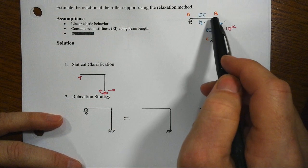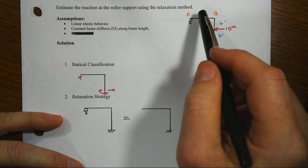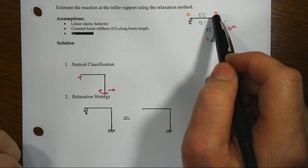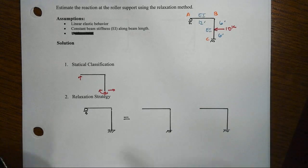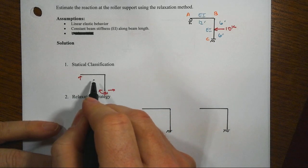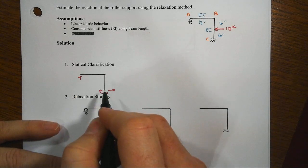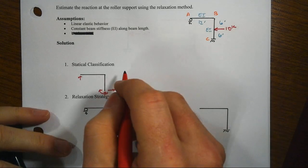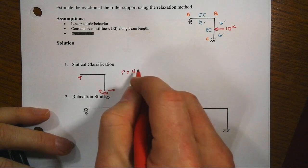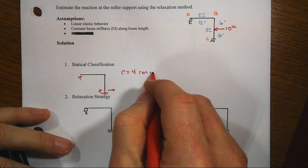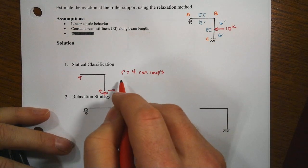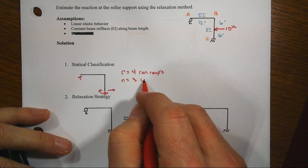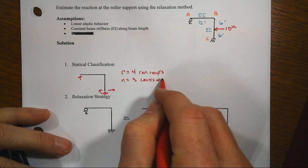Ultimately we want to find out how much this structure sways. The reason why we're going to go find that reaction at the roller support is because of what we discover when we look at the statical classification of the system: we have a total of four reaction components and we only have three conditions of equilibrium.